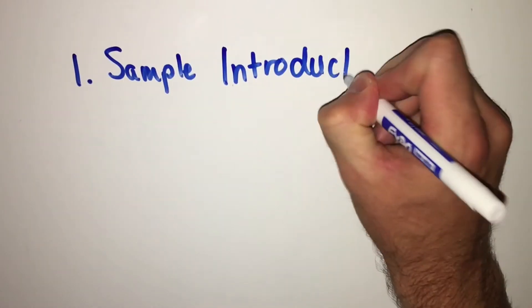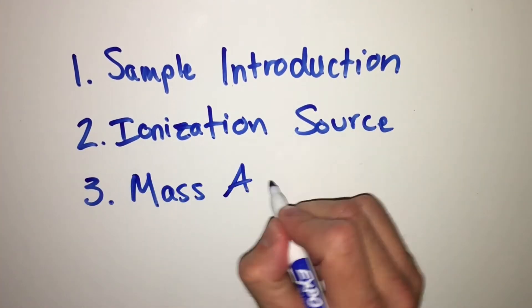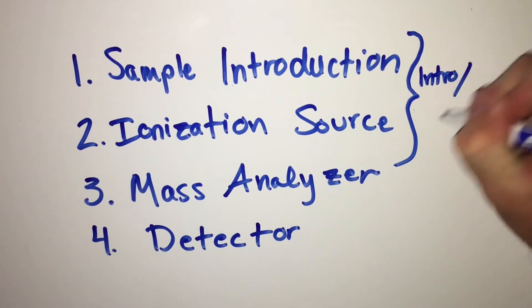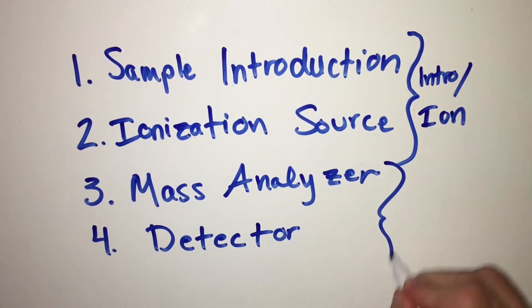A mass spectrometer can be broken down into four simple parts: sample introduction, an ionization source, a mass analyzer, and a detector. In many advanced instruments, some of these parts are combined. Often, the sample introduction and ionization source are combined, or the mass analyzer and detector may be combined as well.